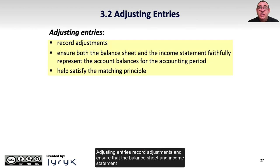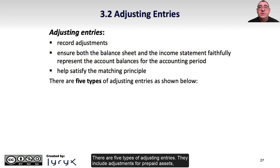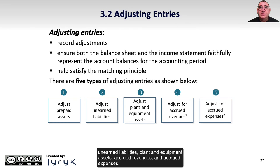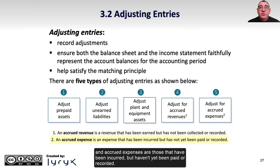Adjusting entries record adjustments and ensure that the balance sheet and income statement faithfully represent the account balances for the accounting period, and help satisfy the matching principle. There are five types of adjusting entries: prepaid assets, unearned liabilities, plant and equipment assets, accrued revenues, and accrued expenses. Accrued revenues are revenues that have been earned but not yet collected or recorded, and accrued expenses are those that have been incurred but not yet paid or recorded.